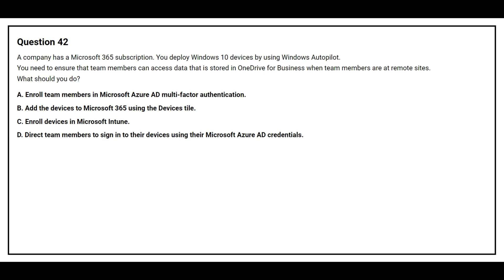Question number 42: A company has a Microsoft 365 subscription. You deploy Windows 10 devices by using Windows Autopilot. You need to ensure that team members can access data stored in OneDrive for Business when at a remote site. What should you do? Option A: Enroll team members in Microsoft Azure AD Multi-Factor Authentication. Option B: Add the devices to Microsoft 365 using the Devices style. Option C: Enroll devices in Microsoft Intune.